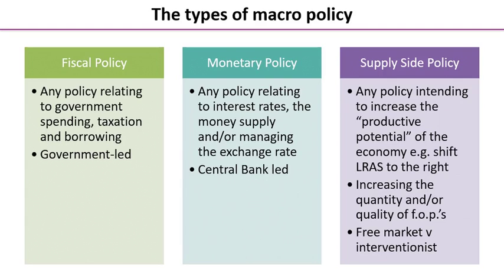Supply-side policy is any policy intended to increase the productive potential of the economy — in other words, shifting long-run aggregate supply to the right. This is effectively the same as causing an economy's production possibility curve to shift to the right, achieved by increasing the quantity and/or quality of an economy's factors of production. There are two broad categories: free market policies, where the government removes rules and regulations, and interventionist policies, where the government actively intervenes and usually spends money to improve long-run aggregate supply.